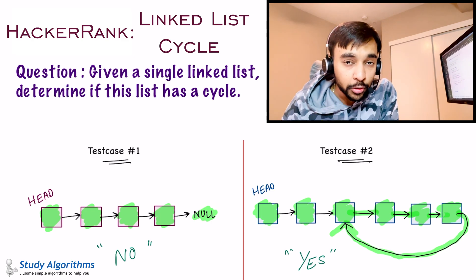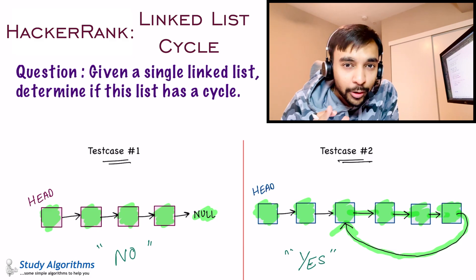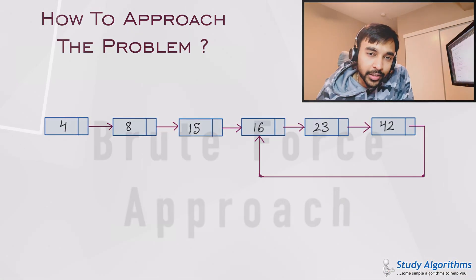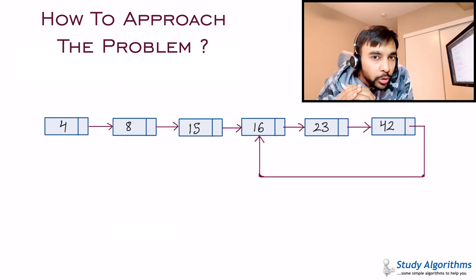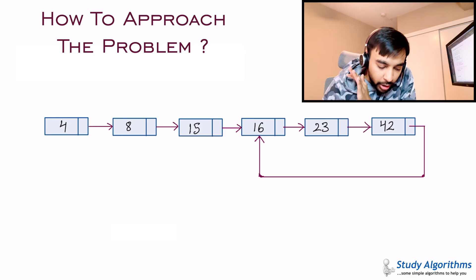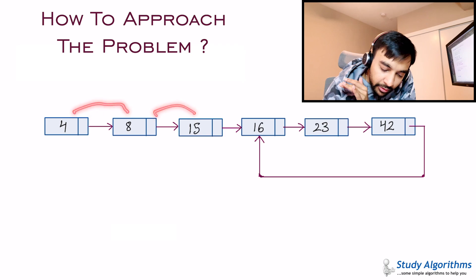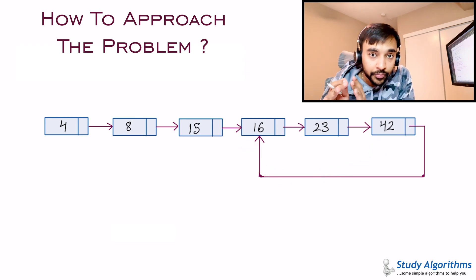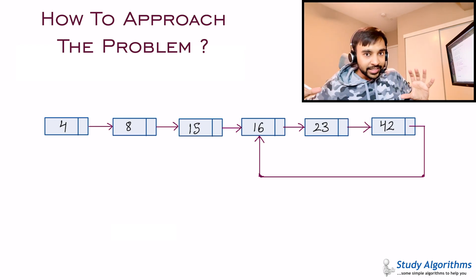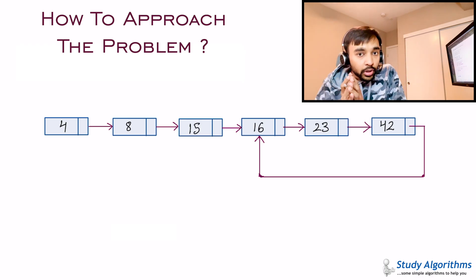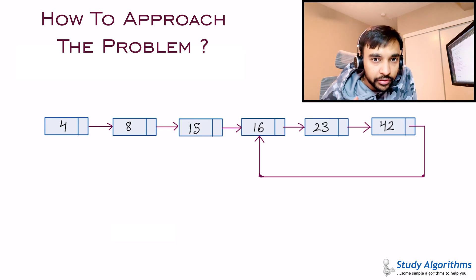If the problem statement is now clear to you, feel free to try it out on your own. Otherwise, let us look at some innovative ways to solve this problem. You have this sample linked list that has a loop. What is the most basic solution? You can start to traverse it — you get values 4, 8, 15, 16, 23, 42, and ultimately 16 again. One solution is: I will traverse the list, and as soon as I see a duplicate value, this has a loop. So you create a hash table and insert all of these values.